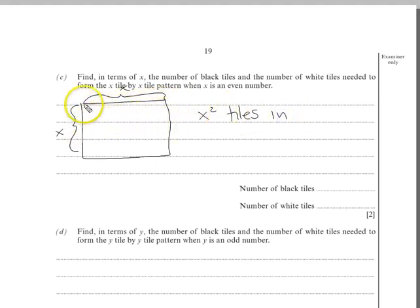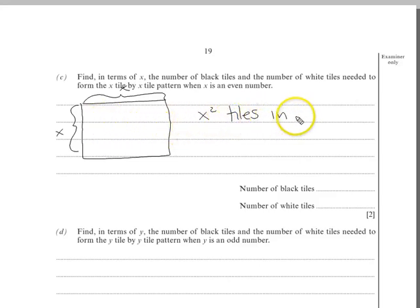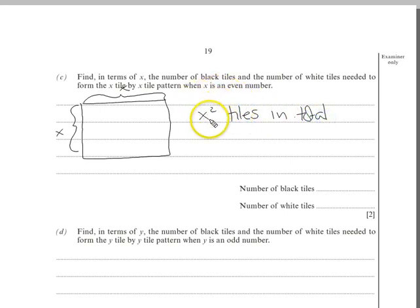It's an even number of tiles because each row is even and there's an even number of rows, so the total is obviously even. Half of the tiles will be white and half will be black — that's x squared over 2 each.